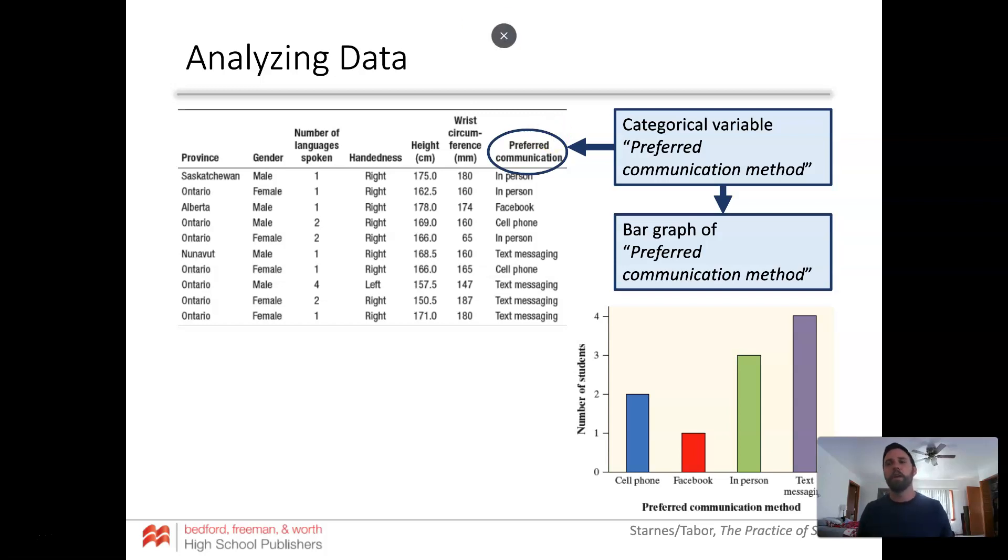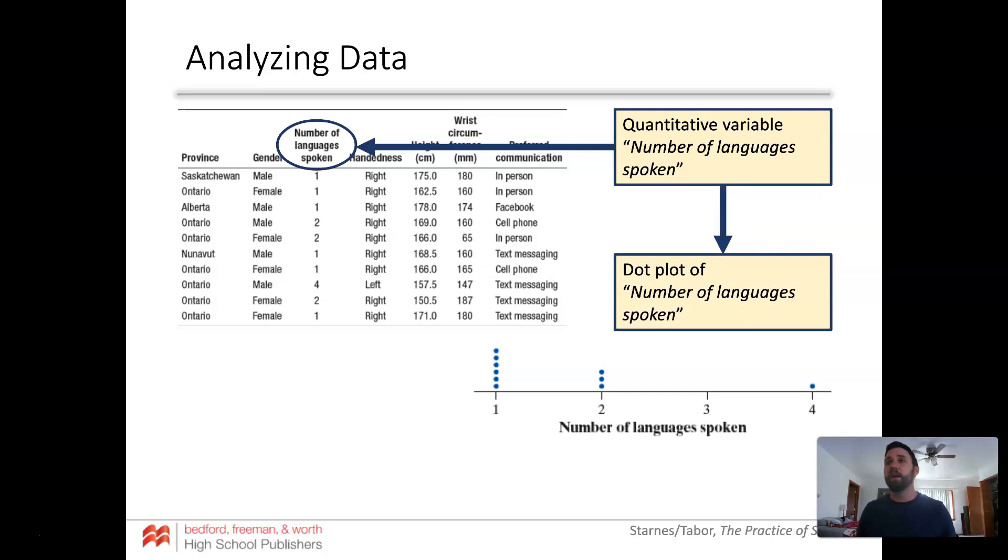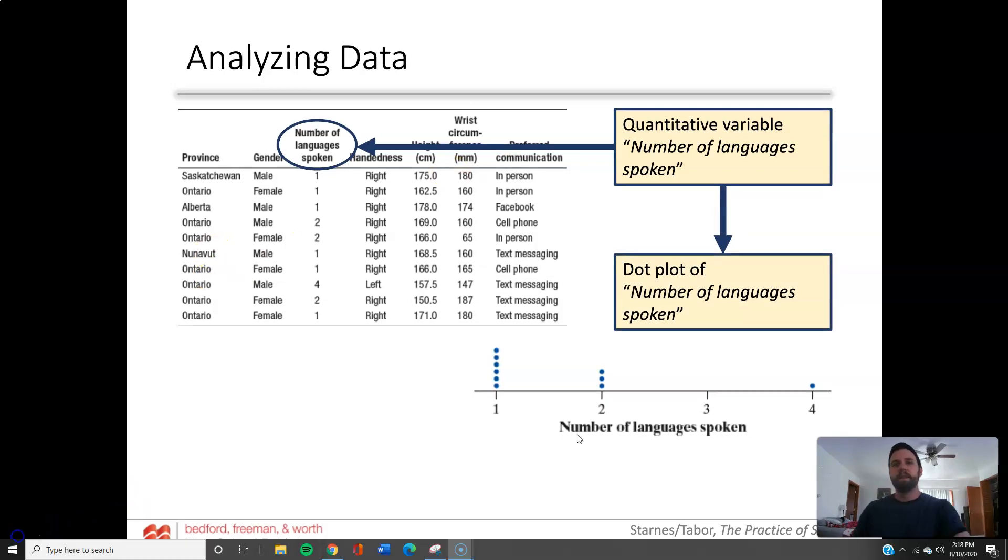Now if you look at quantitative variables, we like to use dot plots. Dot plots are a great way to show distribution of different quantitative data.